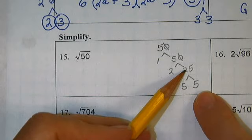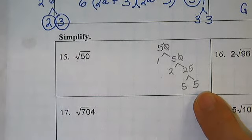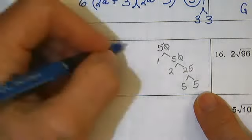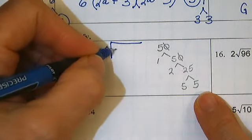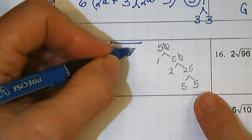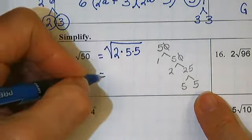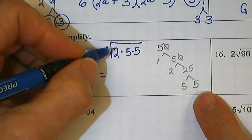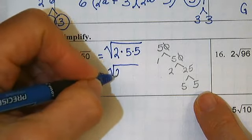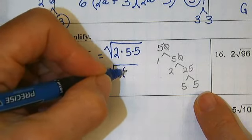Five times five is twenty-five. So the square root of fifty is equal to the square root of two times five times five is equal to two times twenty-five.